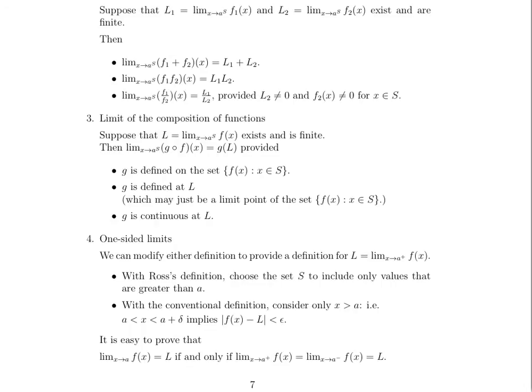Last topic is one-sided limits. You guys have probably seen this notation before where we say X approaches A from the right or when that's a minus sign there, X approaches A from the left. So we can modify either definition to provide a definition for the limit as we approach from a particular side of F of X. So with Ross's definition, we choose the set S to only include values on one particular side of the point A. So in this case, since we care about approaching from the right,